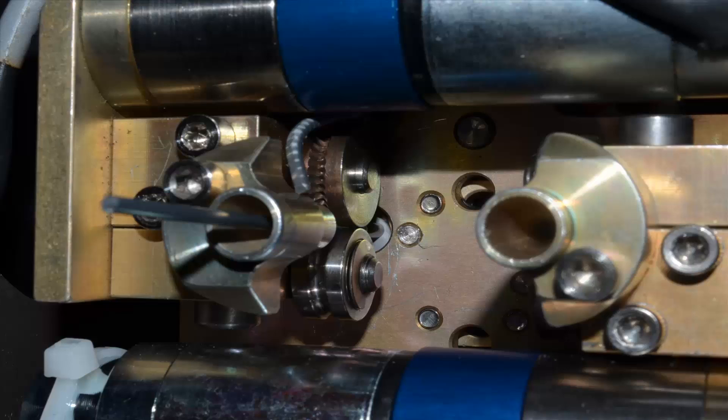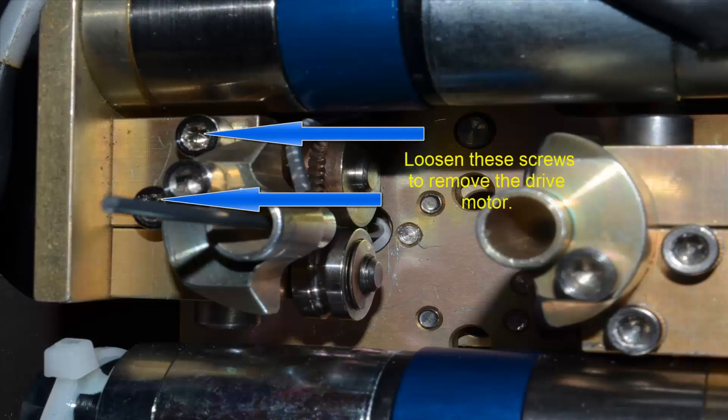Many times you'll have to take the drive motor out to remove that material. There are two captive Allen head screws that can be loosened, which allows you to remove the drive motor from the swivel head assembly.